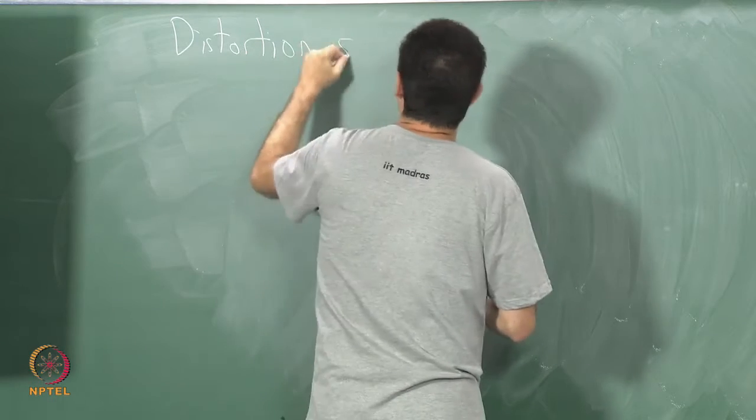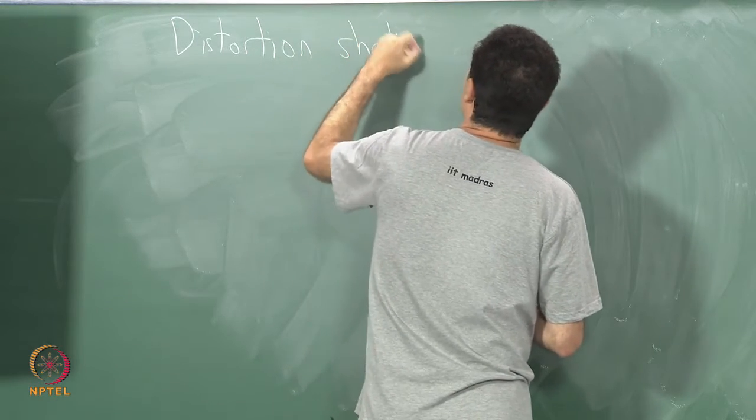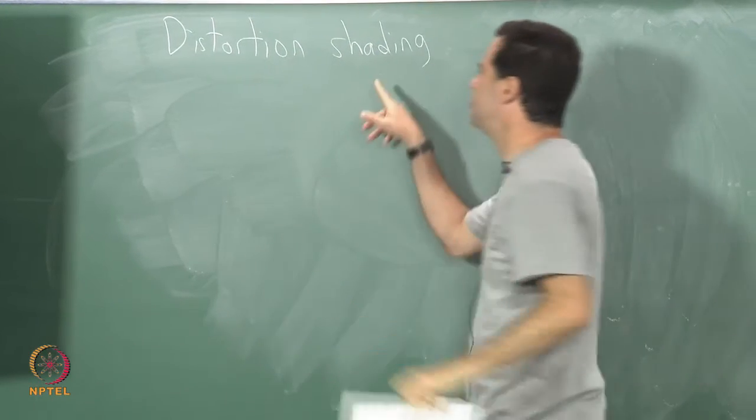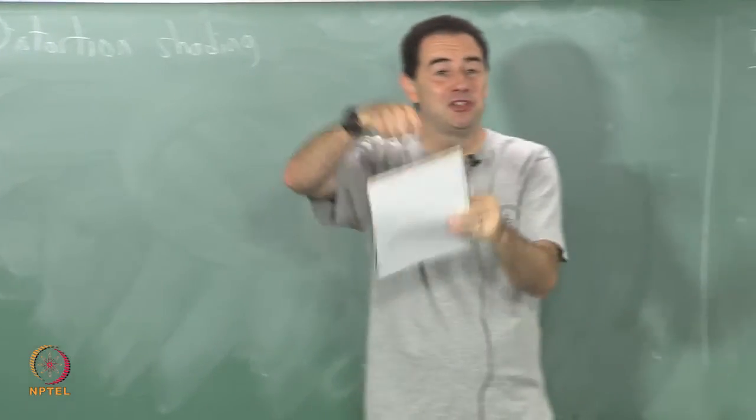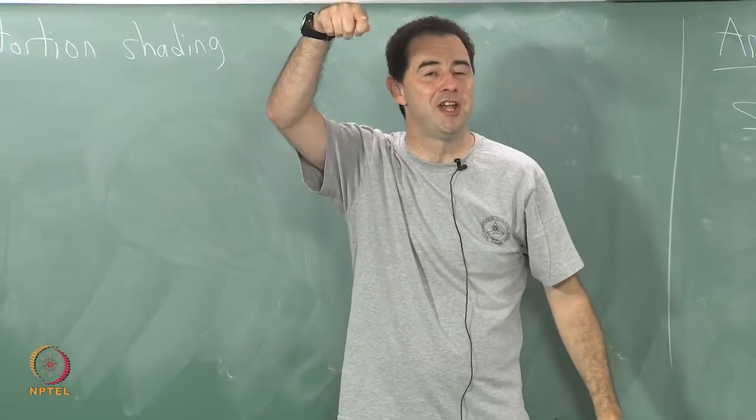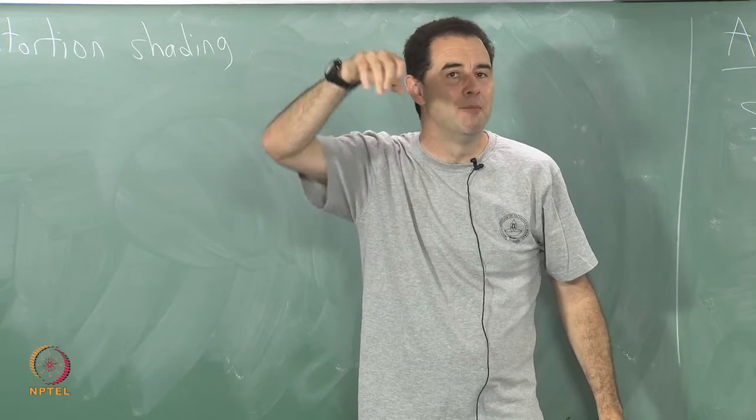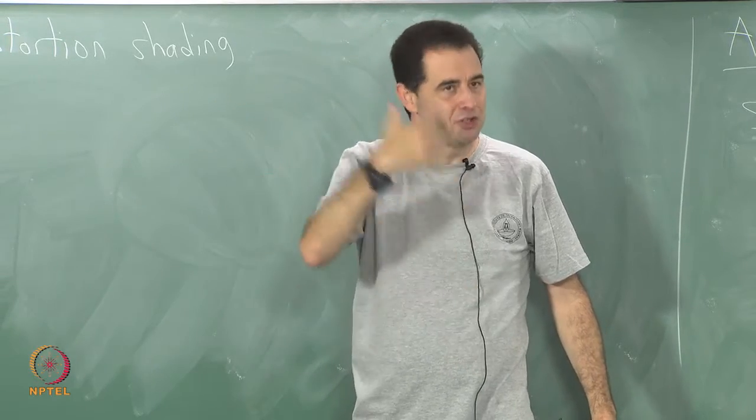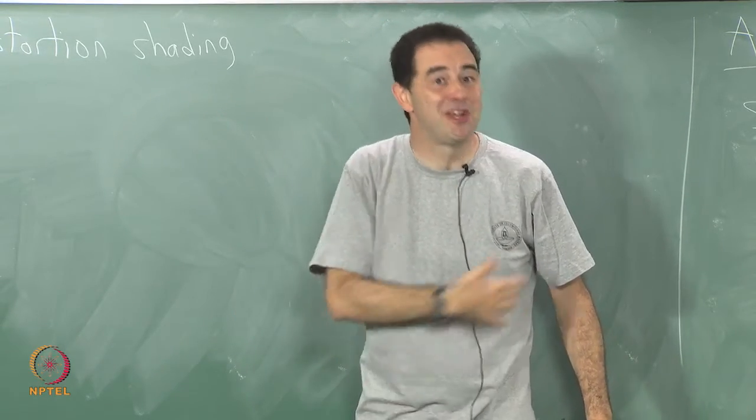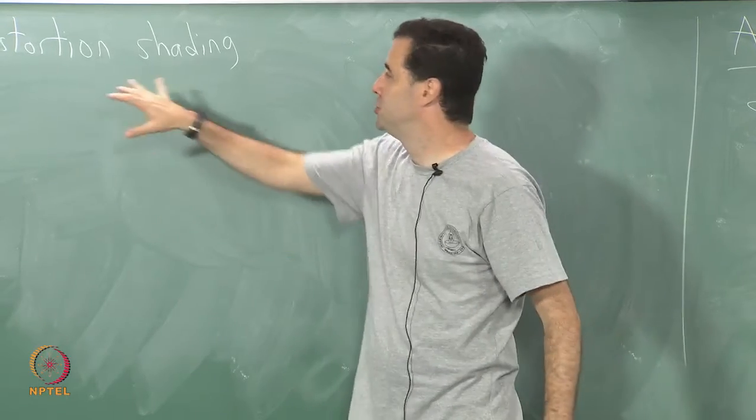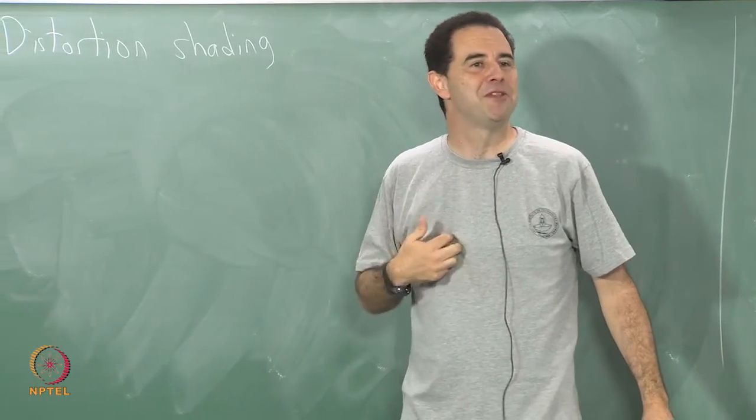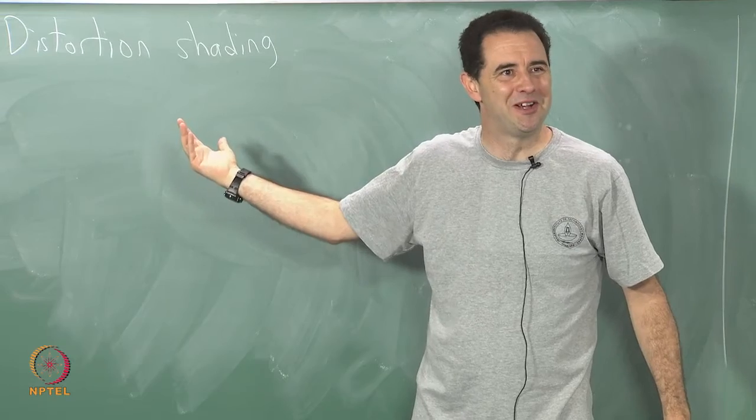Sometimes this is called distortion shading. I find it unusual to use the word shading for a calculation that just does a stretching, because shading does not have to do with propagation of light. But because this can be done in a style that looks like a GPU operation and it is in the rendering pipeline, people often call it distortion shading. If I were naming things I would not call it that because it does not look like shading to me.